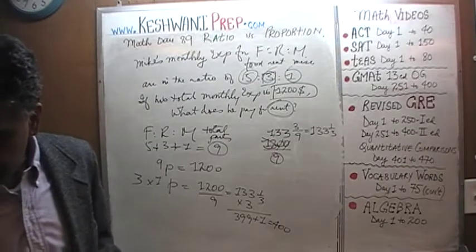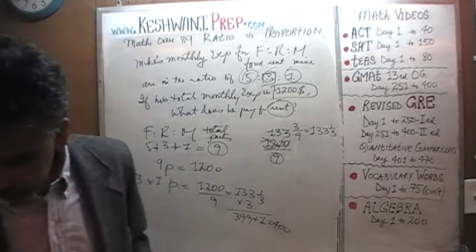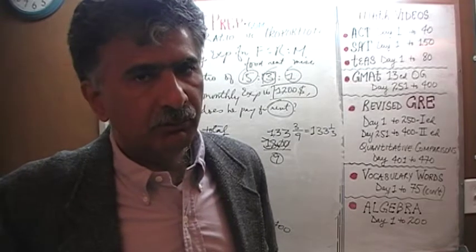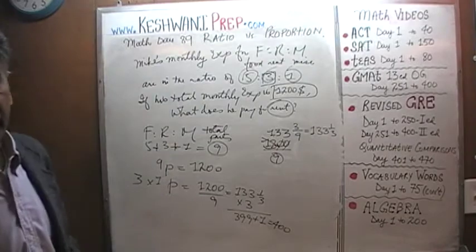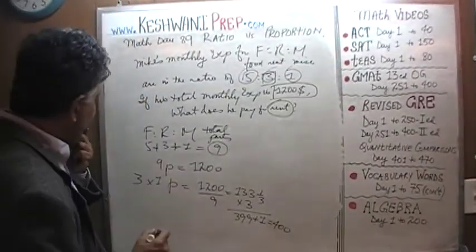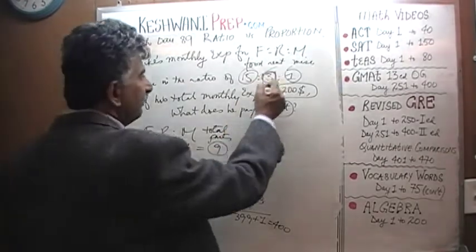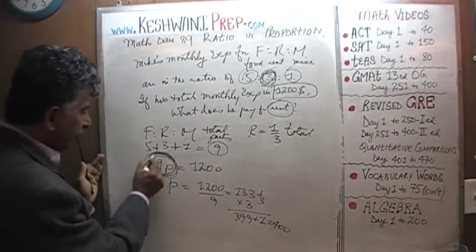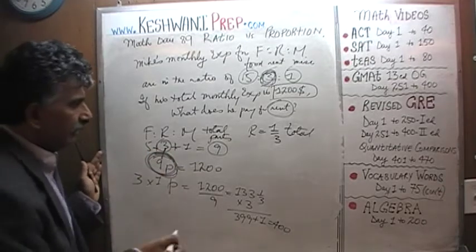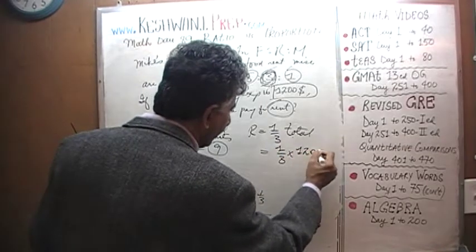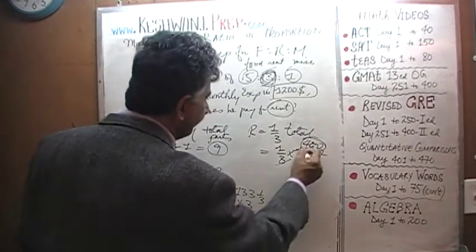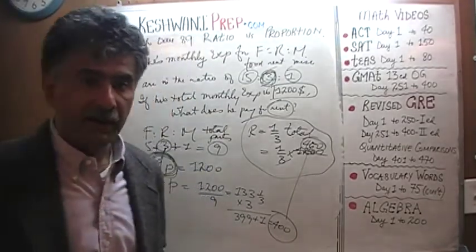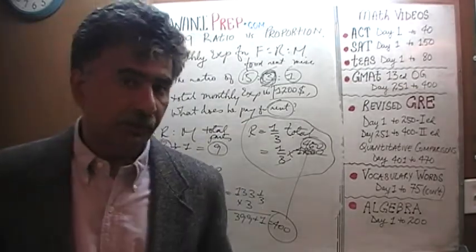At this point I hope you were able to see that I went about this problem in a very roundabout way. This problem is actually very straightforward. Look: the total parts are nine, and rent is three parts — which means rent is simply one-third of the total expenditure. Since his total expenditure is twelve hundred, his rent must be one-third of twelve hundred, which is four hundred — exactly what we found. That would have been the smarter, more direct, more efficient way to tackle this problem. The long way was very academic. I'll see you tomorrow. Bye now.